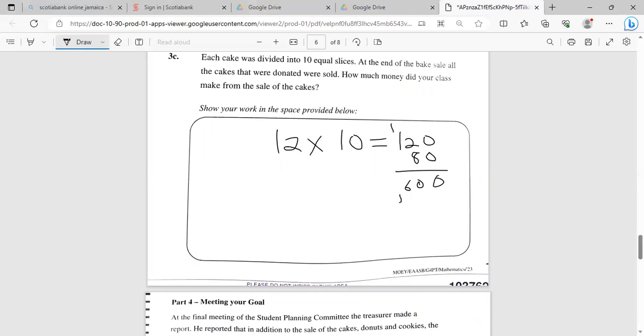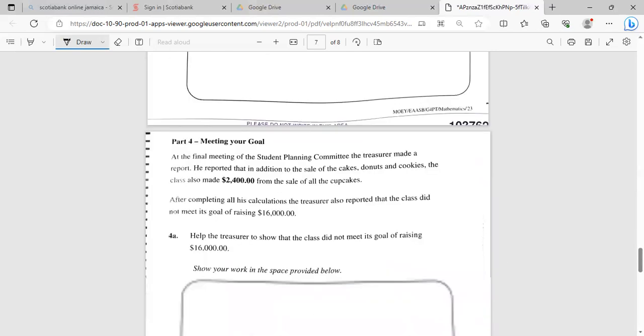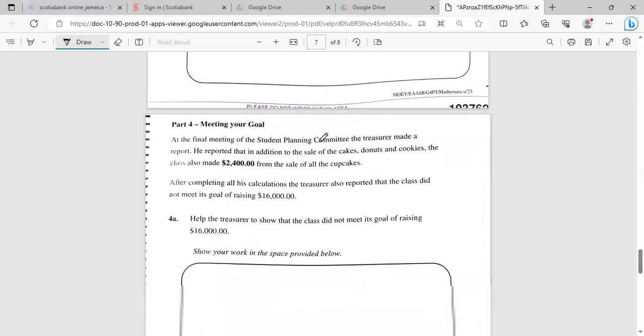I think this was pretty long though for Grade 4, what do you guys think? So eight zero zero, eight times two is sixteen, carry one, eight times one is eight, and one more is nine. So the cake generated $9,600.